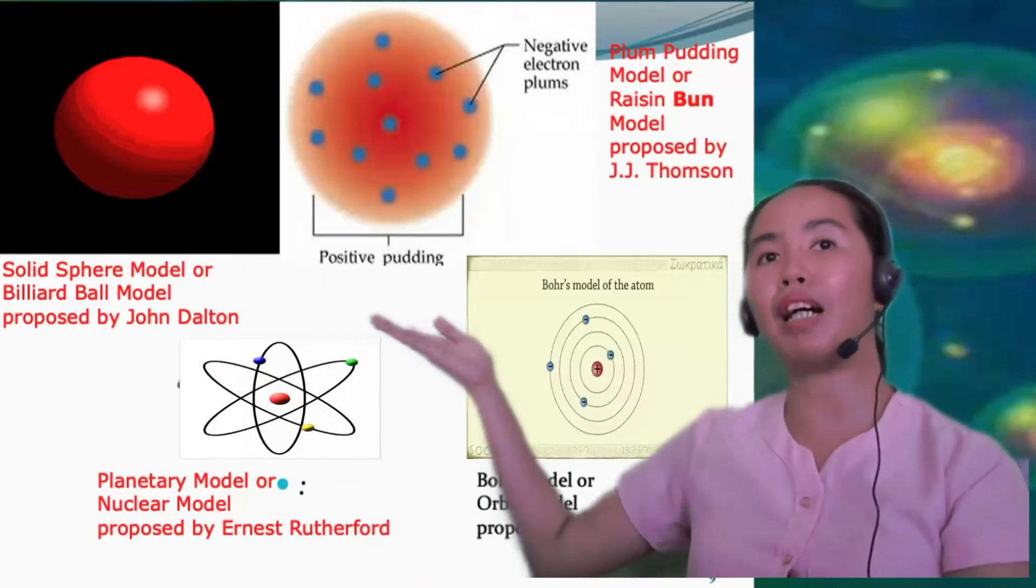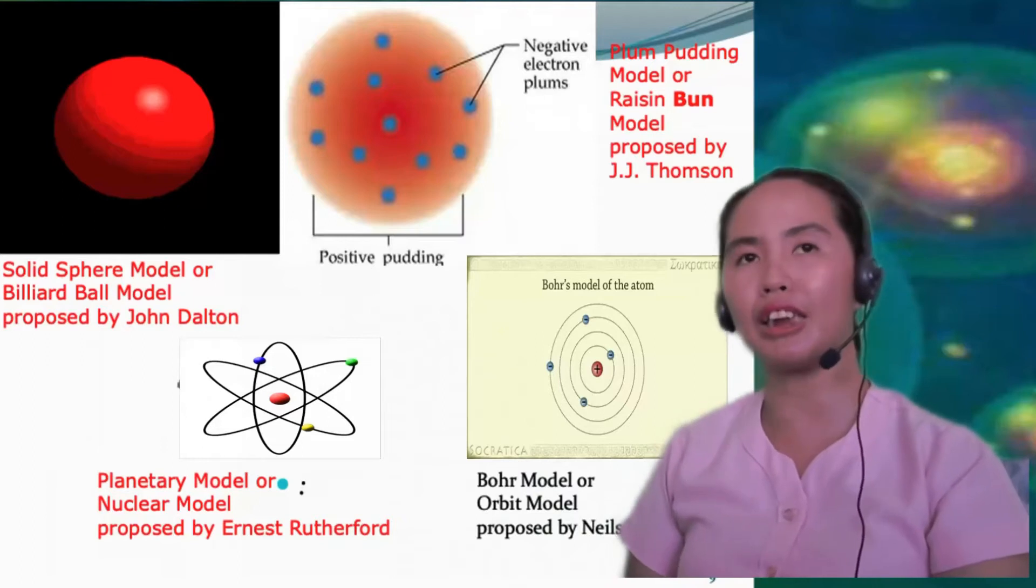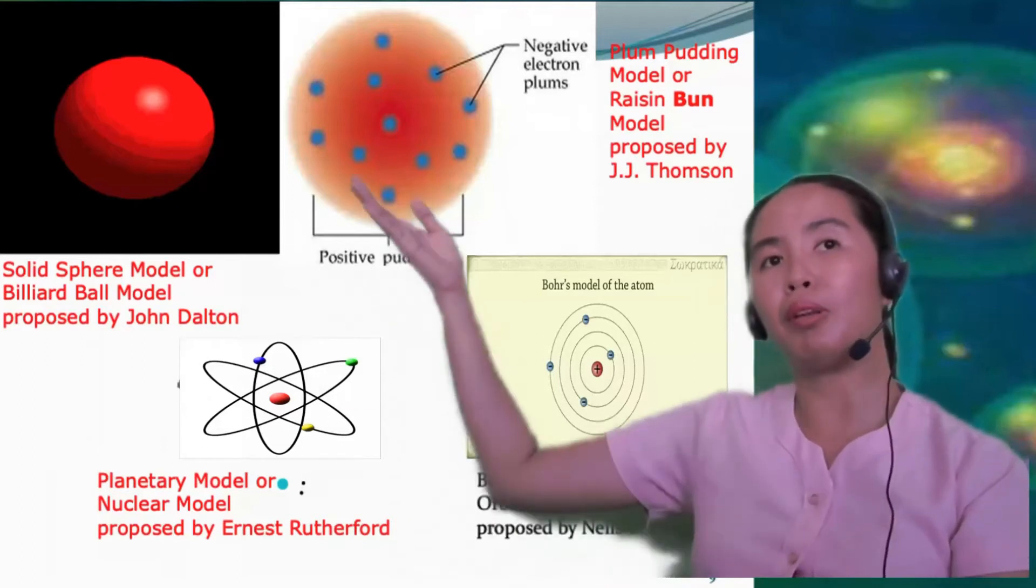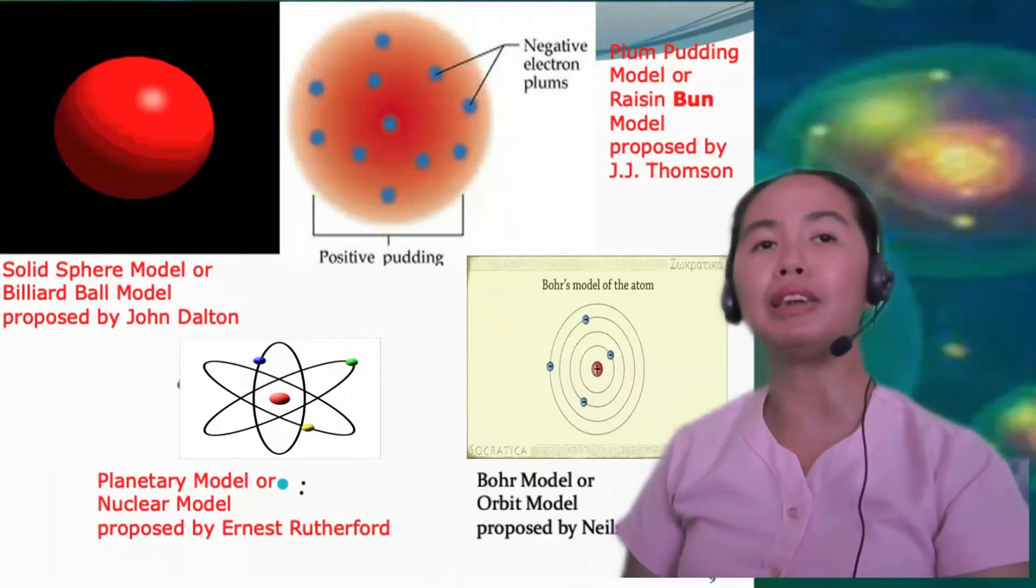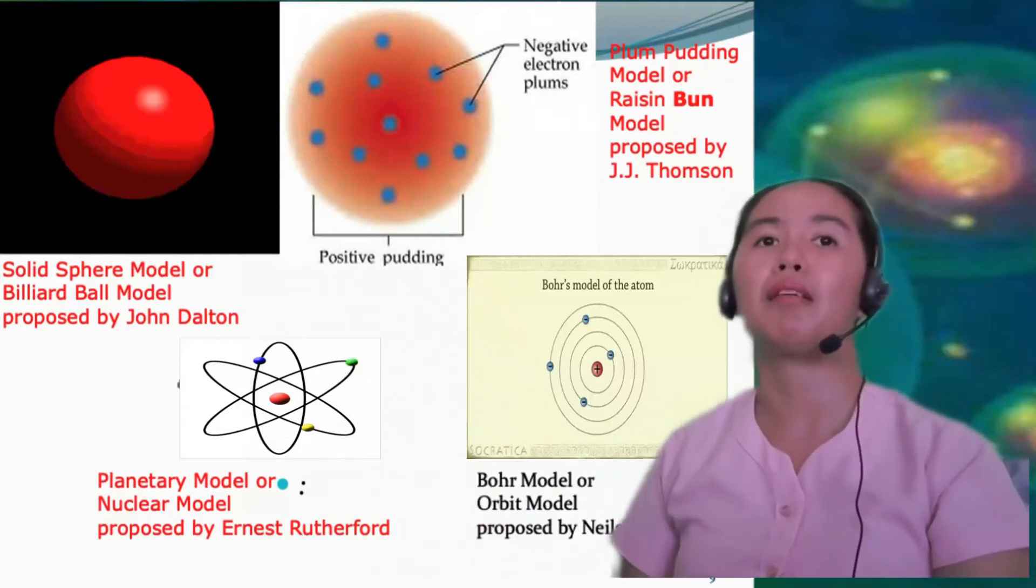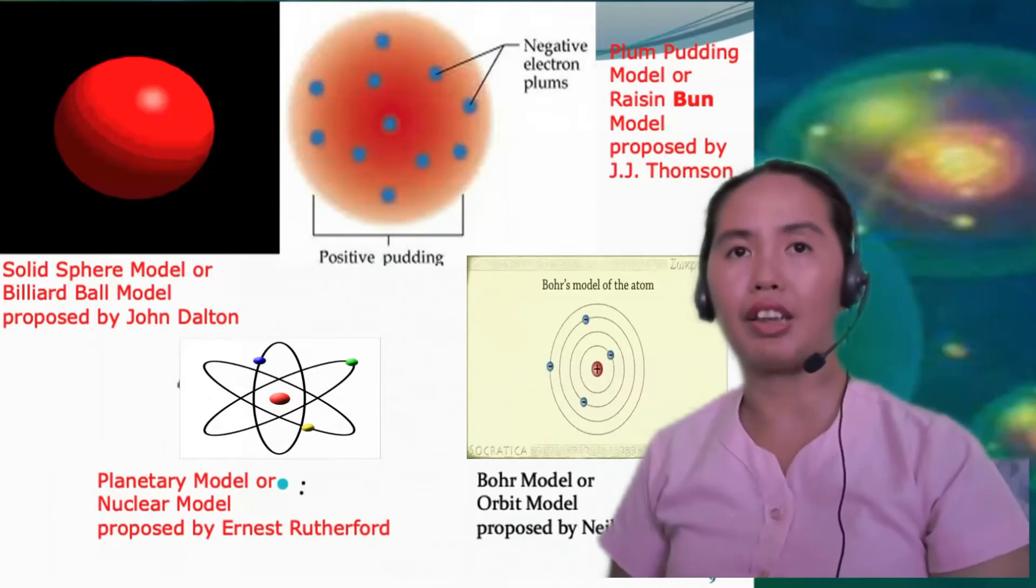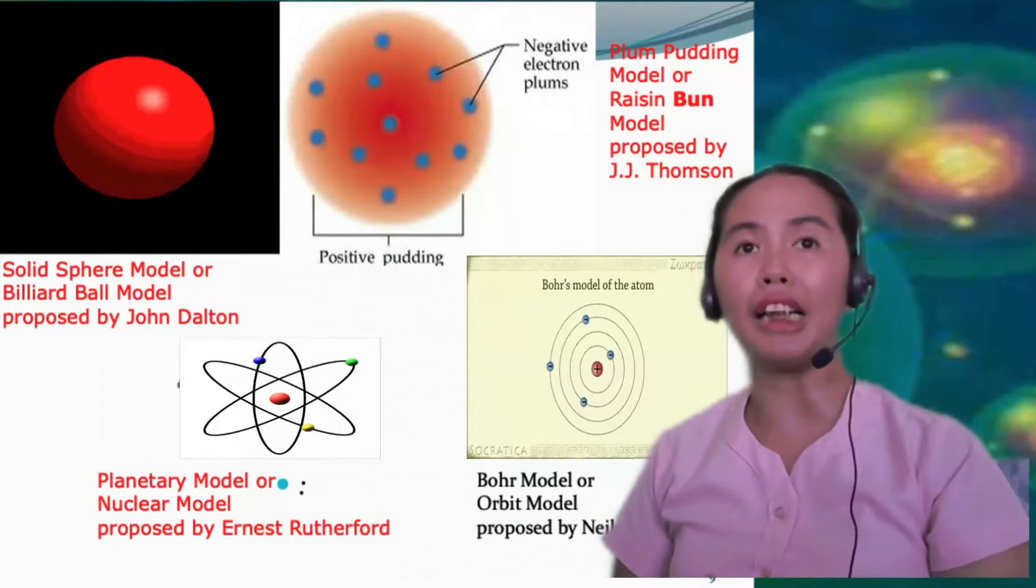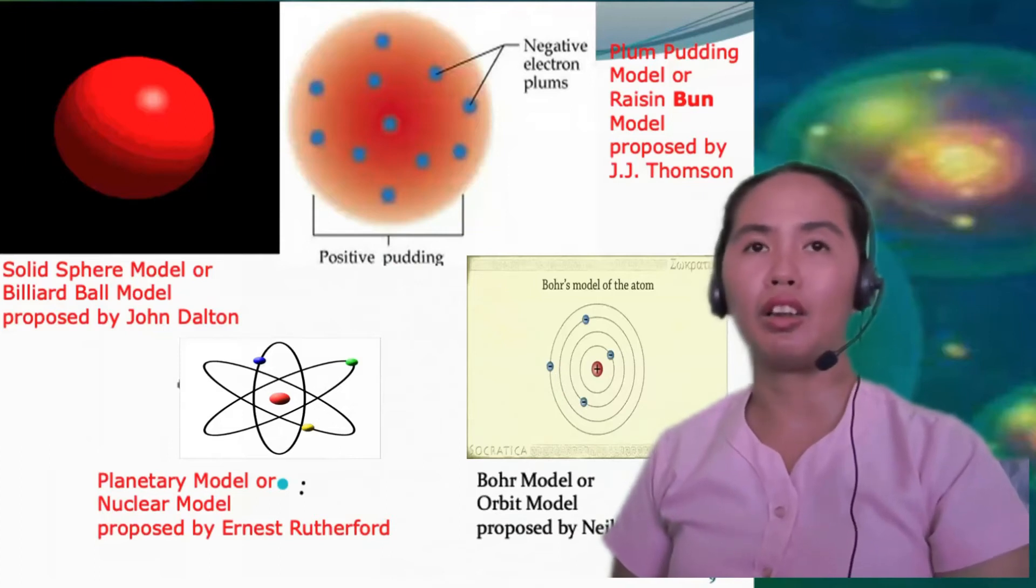Next, we have the plum pudding model, or the raisin bun model, which was proposed by J.J. Thomson. The blue circles represent the negative electron plums, while the orange represents the positive pudding. I know you are familiar already with the raisin bread. So just imagine the raisins represent the negative electron plums, while the bread itself is the positive. So that is how J.J. Thomson sees the model of the atom.